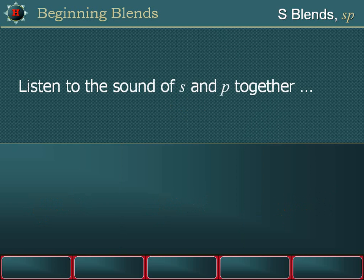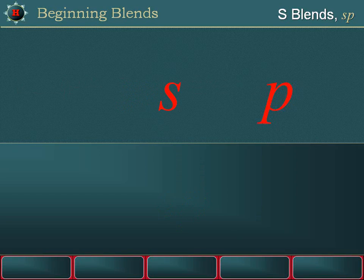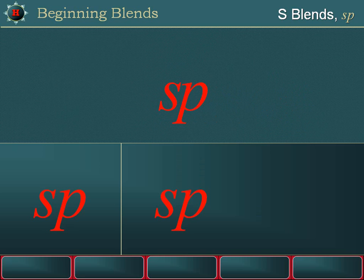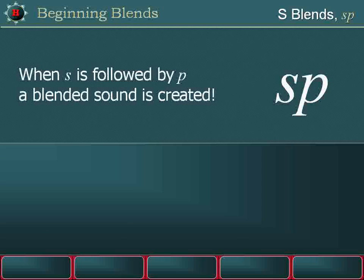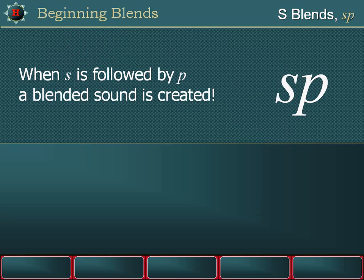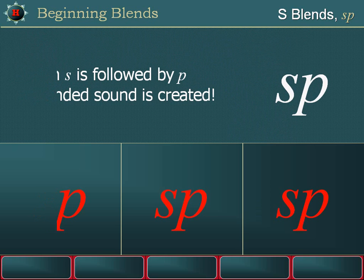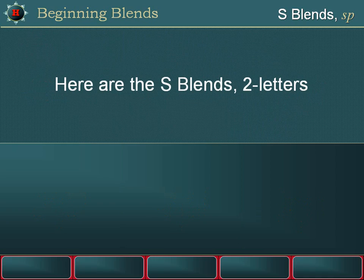Listen to the sound of S and P together. When S is followed by P, a blended sound is created. Please say after me. Sp. Sp. Here are the S-blends: two letters.